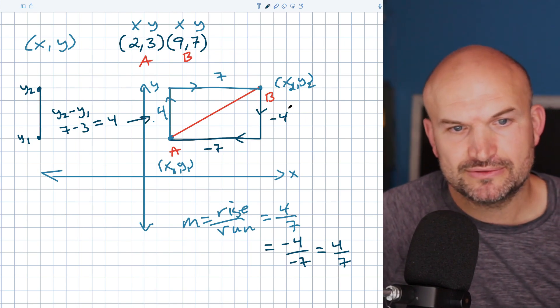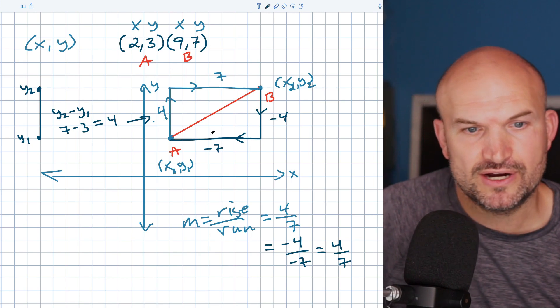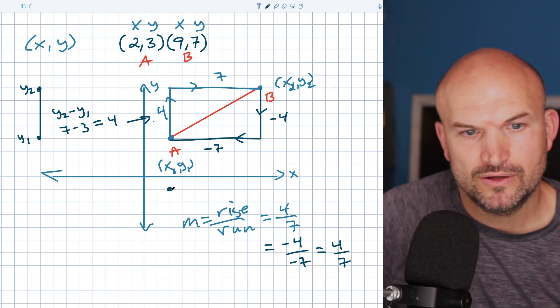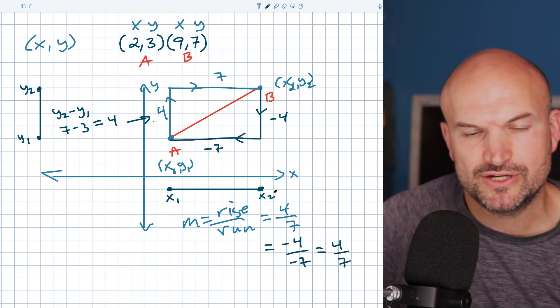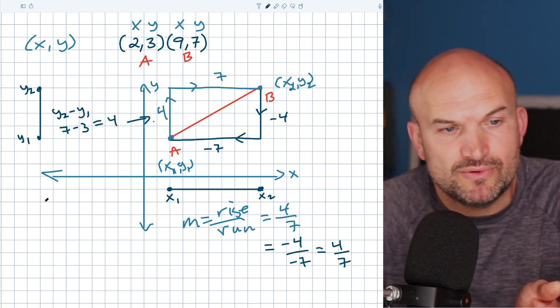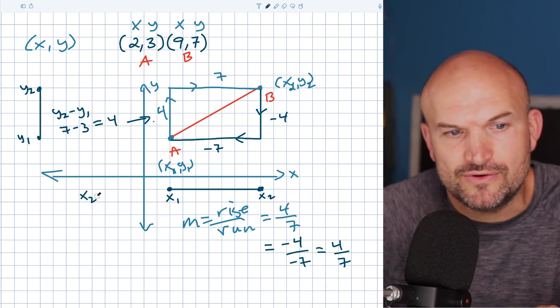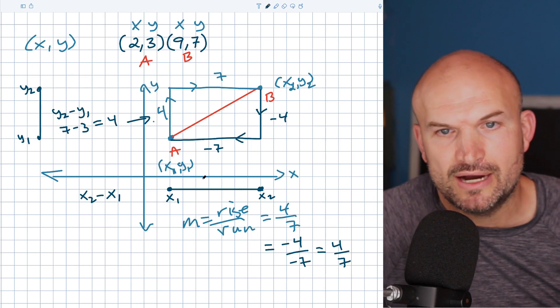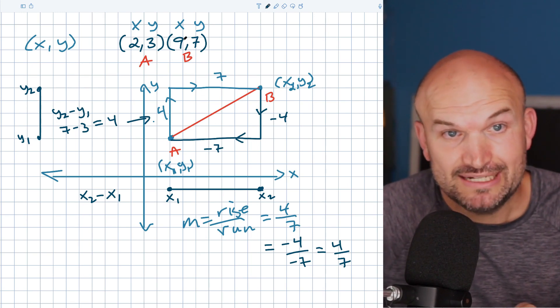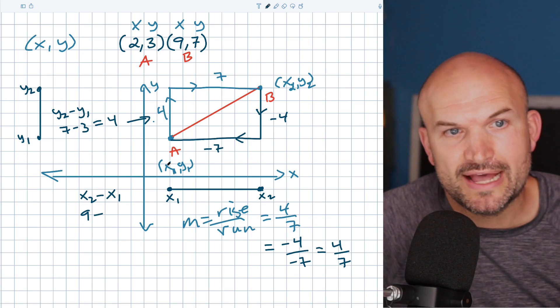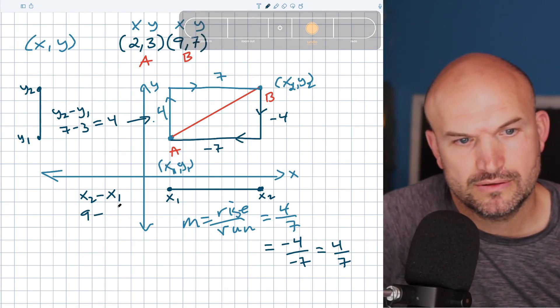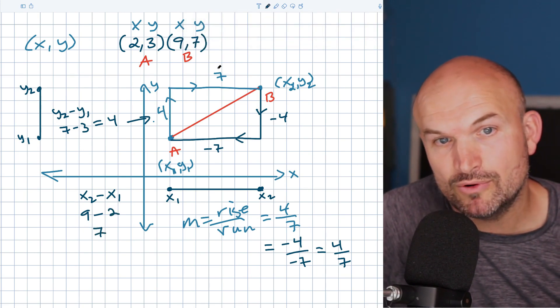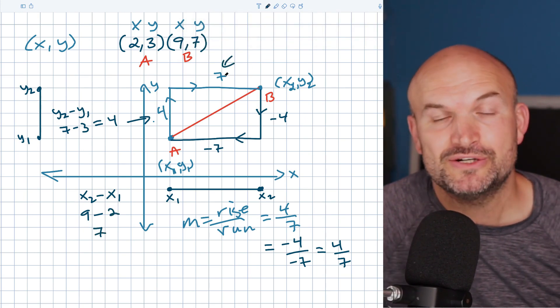Now what about the horizontal change? That was going to be from here to here. Now again, this is going to represent my X1 and this represents my X2. So if I want to find the difference, you can count, but what's another way you can do that? You can just say X2 minus X1. Now what was my X2? That value was nine. And then we subtracted it from two, which equals seven, which is exactly what we got here. That's going to be your seven from there.